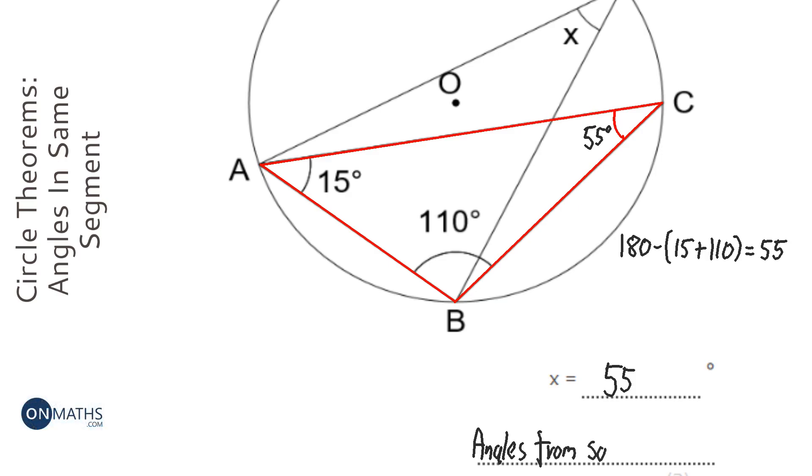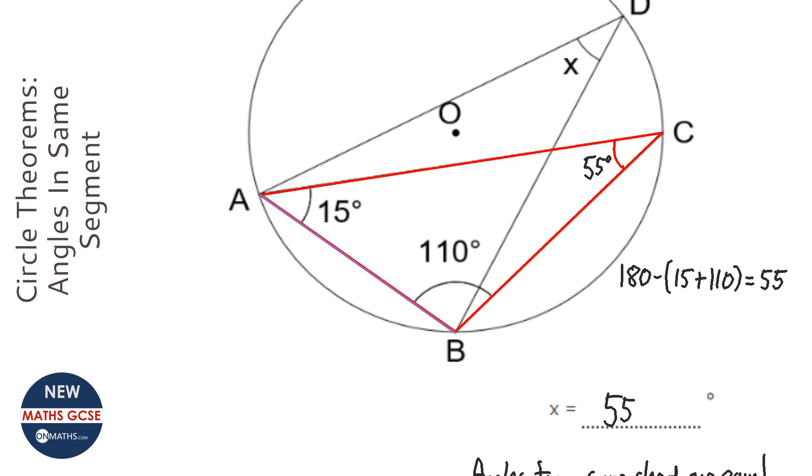What we mean by angles from the same chord are equal is if you look, both of these angles here, the x and the 55, both come from this line here. We've got the x shooting up this way from this chord.